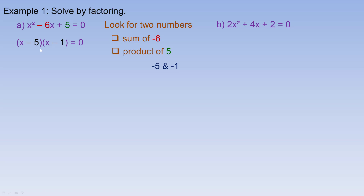You can always check the factored form by expanding. If I expand these two binomials: x times x is x squared, x times negative 1 is negative x, negative 5 times x is negative 5x, and negative 5 times negative 1 is positive 5. Notice x squared at the beginning, 5 at the end, and negative x and negative 5x add to negative 6x. So that demonstrates the factoring is correct.